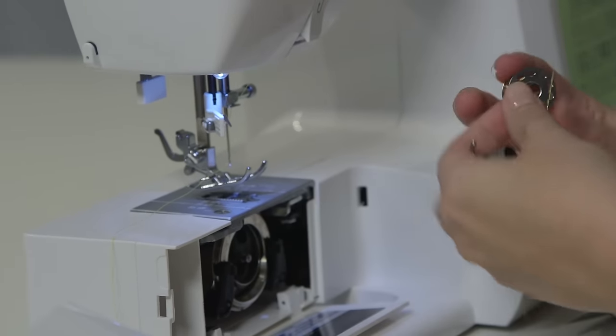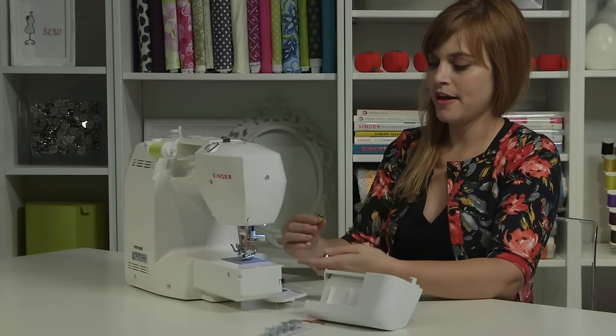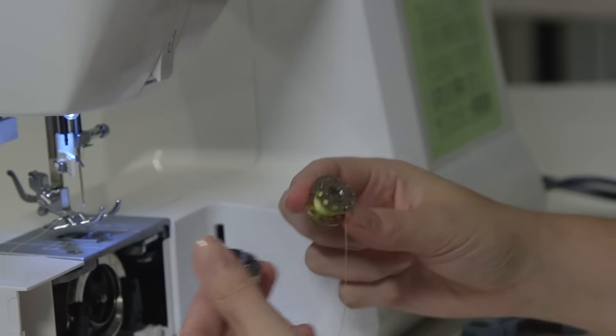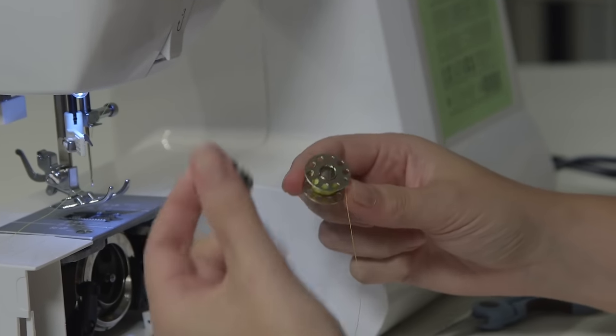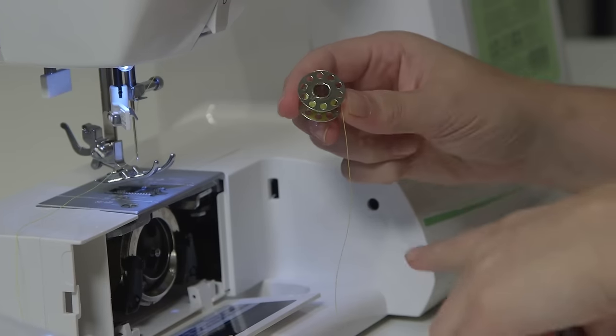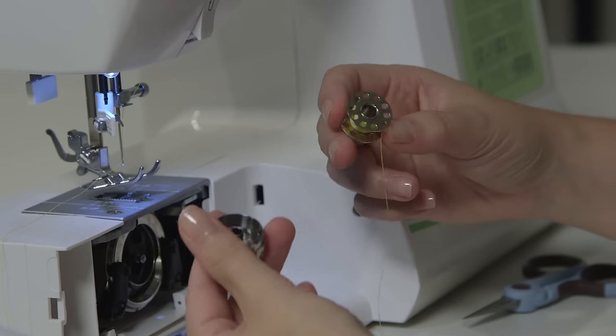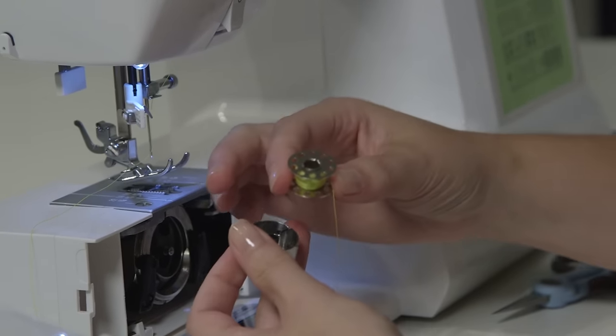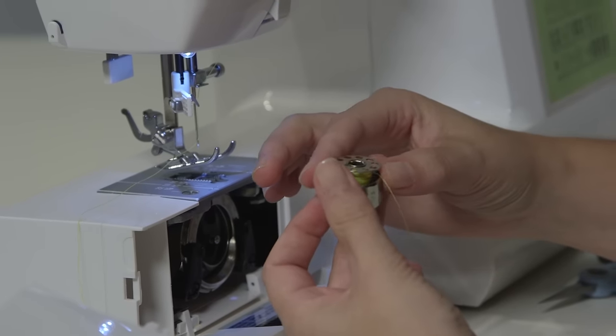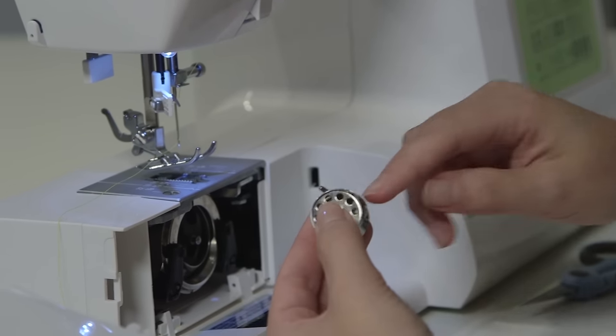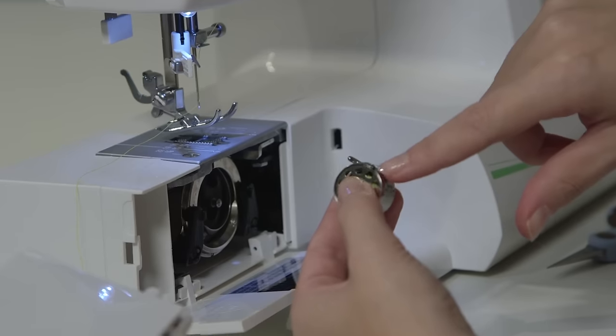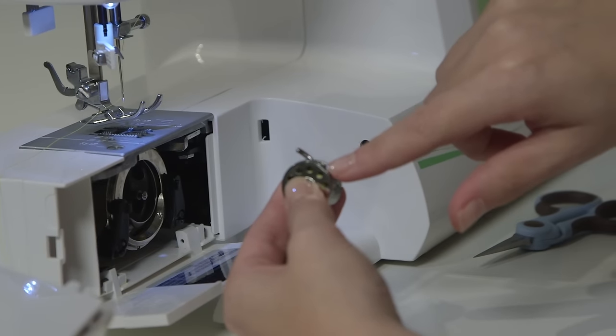Then you're going to take your bobbin, and you want to hold that so it's making the number nine shape with the thread tail coming off. So use your imagination and imagine that this is the stem of the number nine, and the bobbin is the top part. Holding it just like that, you're going to drop it in, and there's a groove on the edge of the bobbin case. So you need to find that groove,